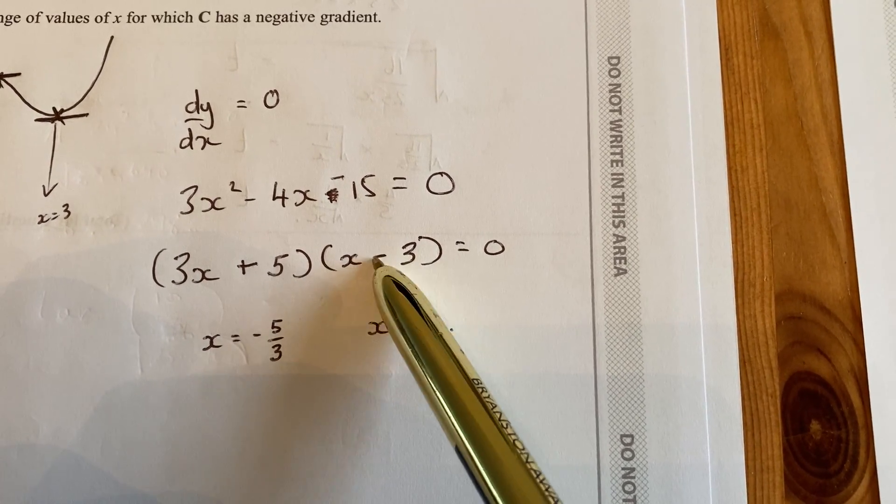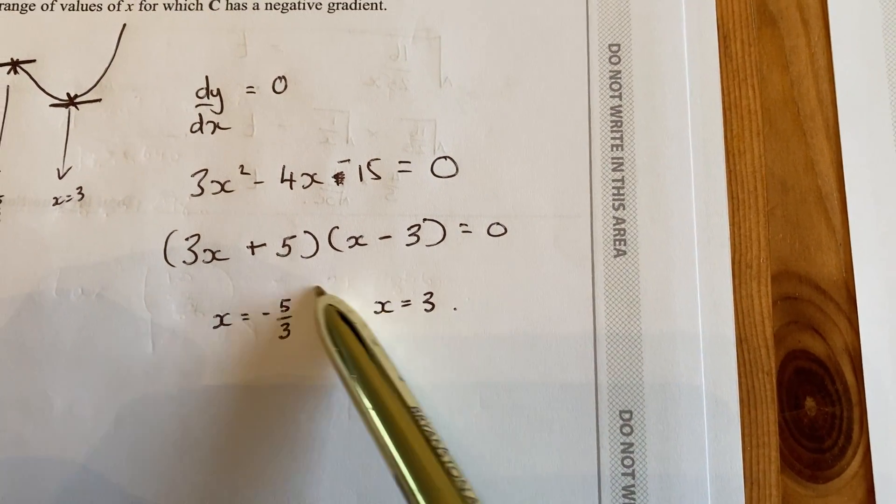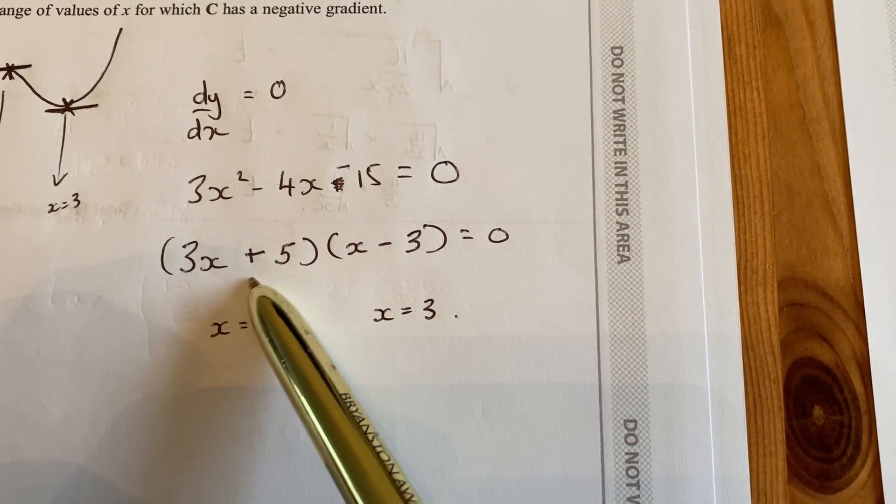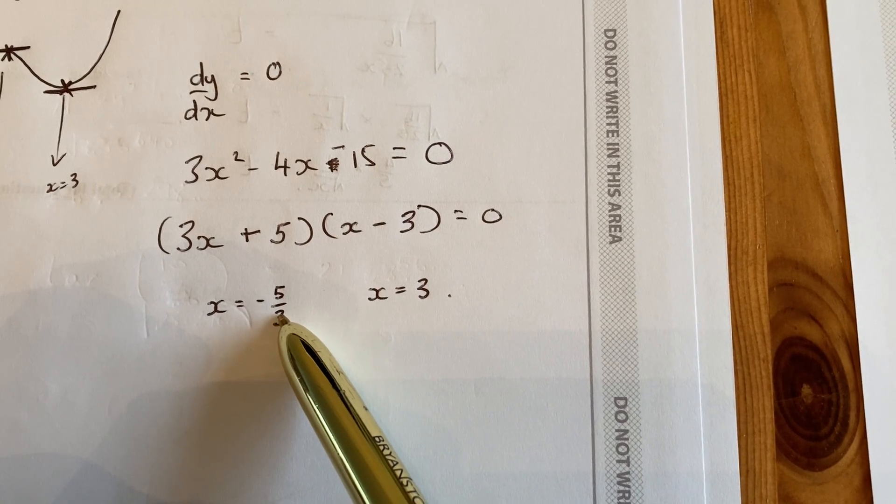How do you make this right-hand bracket equal to 0? x would need to be 3. How do you make this left-hand bracket equal to 0? x would need to be minus 5 over 3.